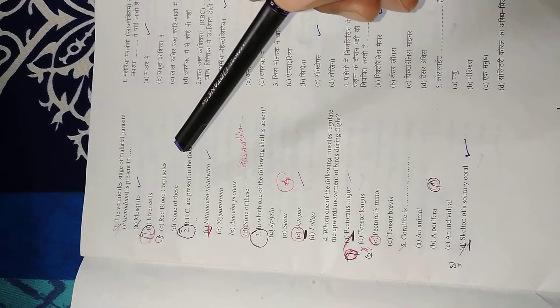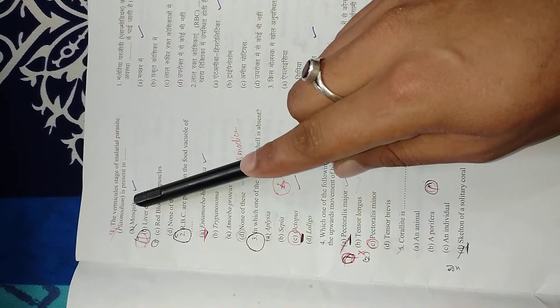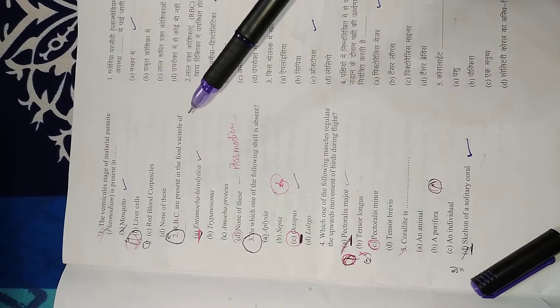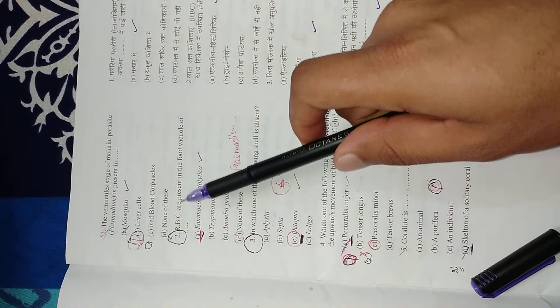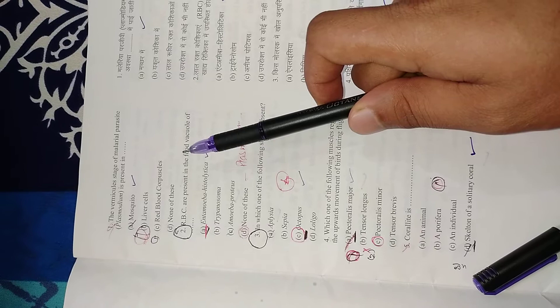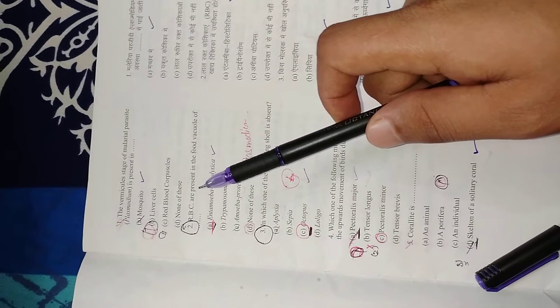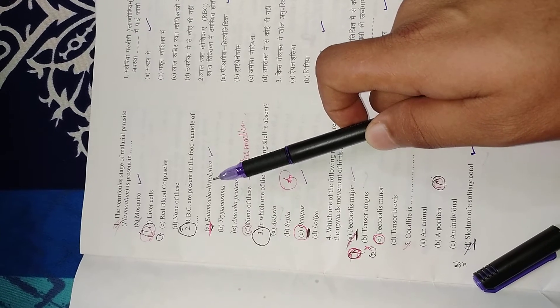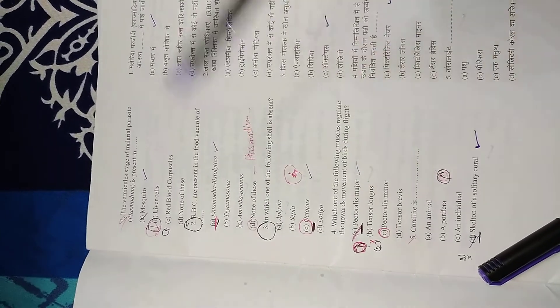Question 2: RBCs are present in the food vacuole of which organism? RBCs will be present in the food vacuole of that organism which feeds on RBCs. The right answer is Entamoeba histolytica.